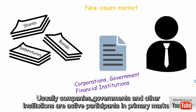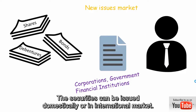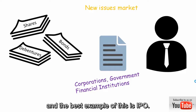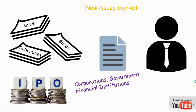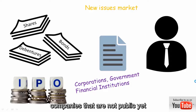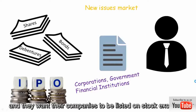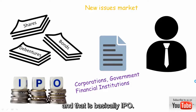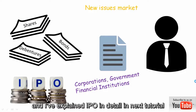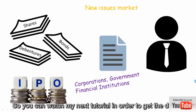Usually companies, governments, and other institutions are active participants in the primary market. The securities can be issued domestically or in the international market. The best example of this is the IPO. An IPO, or initial public offering, is basically when companies that are not yet public — they are private — want their companies to be listed on a stock exchange, so they sell their shares to the general public for the first time. I've explained IPO in detail in my next tutorial, so you can watch that to get the full details.